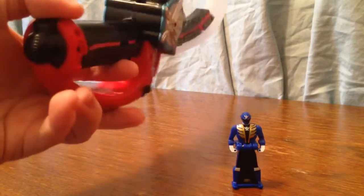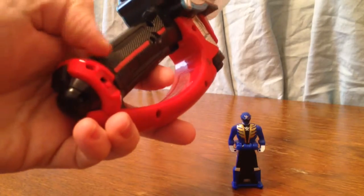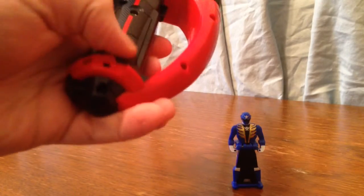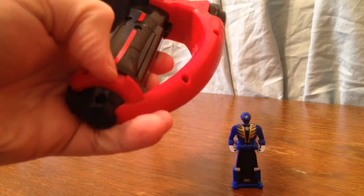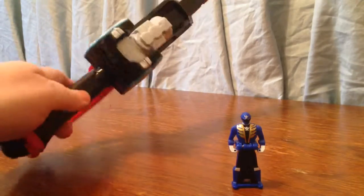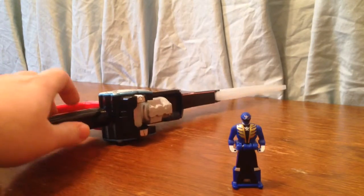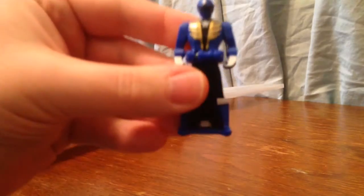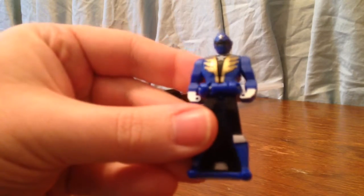Now the on and off switch is camouflaged pretty well. It's this tiny little button down here. You can hear the sound that it makes when you turn it on. This sword comes with the Super Megaforce Blue Ranger.